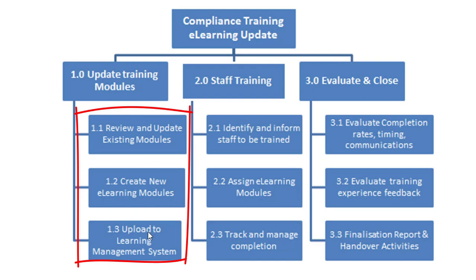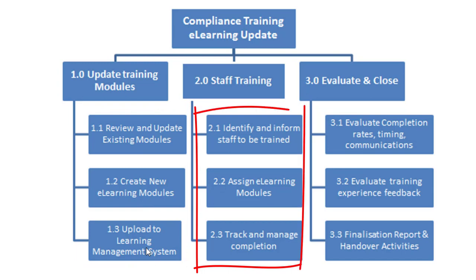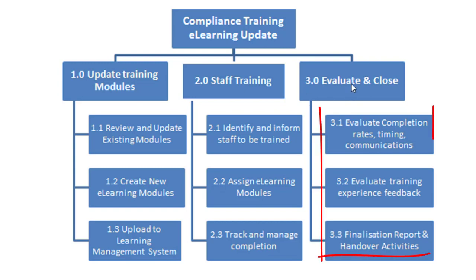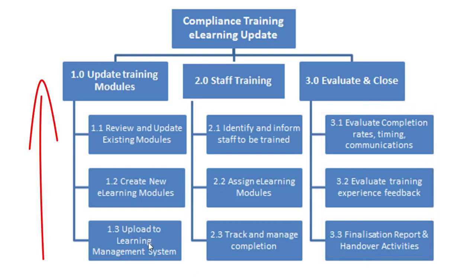Some people call these work packages. Under update training modules, we have: review and update existing modules, create new e-learning modules, and upload them to the learning management system. Under staff training we're going to identify and inform staff to be trained, assign e-learning modules, and track and manage their completion. Lastly, we'll evaluate and close — evaluate completion rates, timing and communications, evaluate training experience feedback, and produce a finalisation report and handover activities. Each of these lower level work packages rolls up to the top level deliverable.